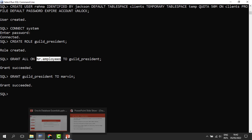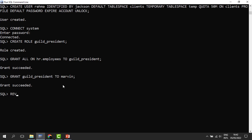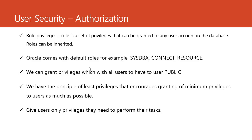Done — Marvin has now been given the role of guild president. That is how we use roles; they help us in managing privileges. If Marvin is no longer the guild president, we just revoke the guild president role and give it to another person. Oracle also comes with default roles.